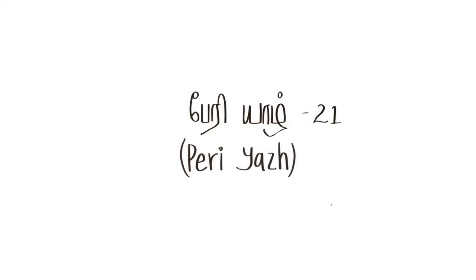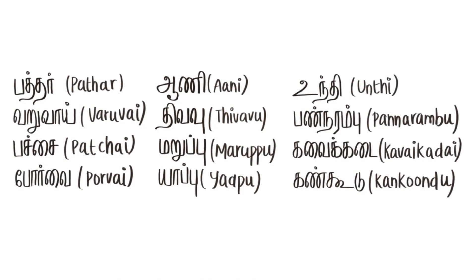Finally, we're going to be talking about the periyal. Periyal means something big, and as the name suggests, periyal is the biggest of the yal types. It generally has 21 or more strings. Periyal is mentioned four times in various Sanghalilakyam — we know this through Kalaywani ma'am's Sanghalilakyat in Isainul. The periyal has various parts including patar, paruvai, pacchai, porvai, aani, thivavu, maruppu, and yaappu.